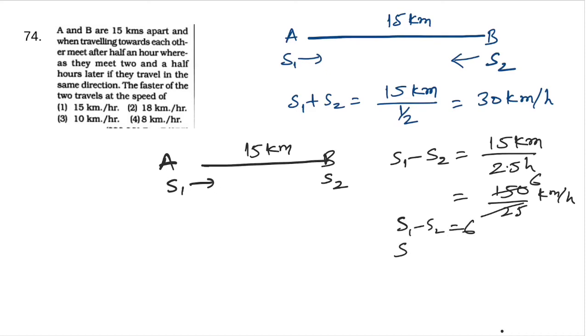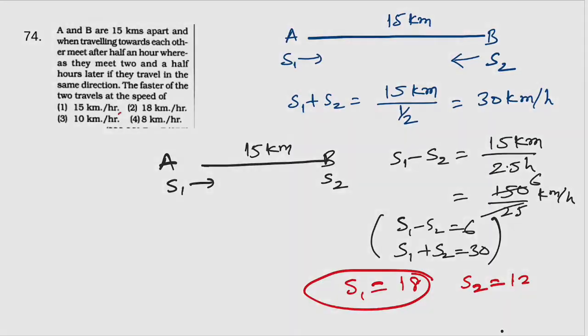S1 plus S2 is 30 and S1 minus S2 is 6. We add this, so we have S1 value of 18. The larger value is 18 km per hour. So the answer is option number 2.